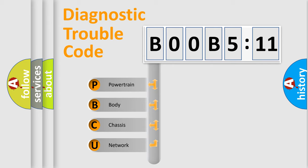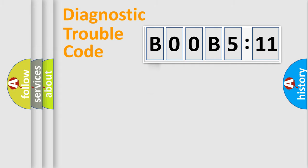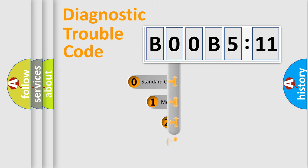We divide the electric system of automobile into four basic units: Powertrain, body, chassis, and network. This distribution is defined in the first character code.